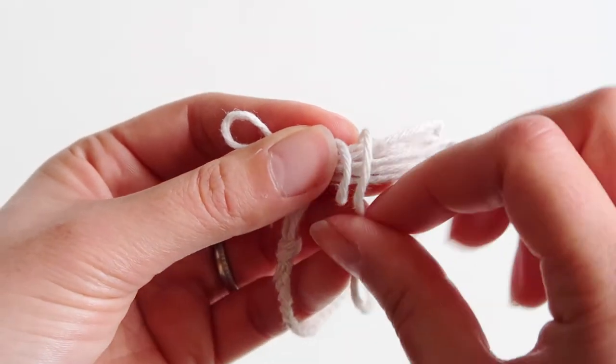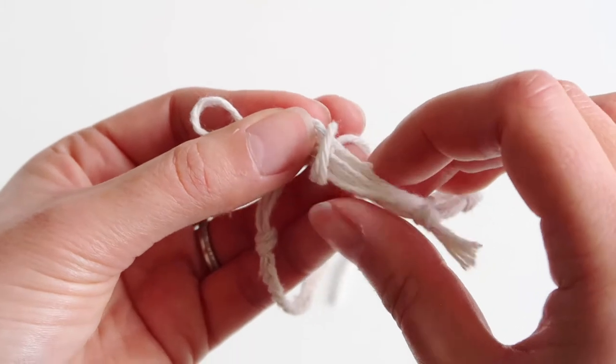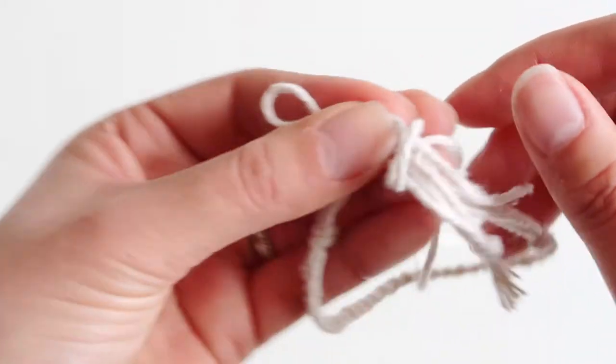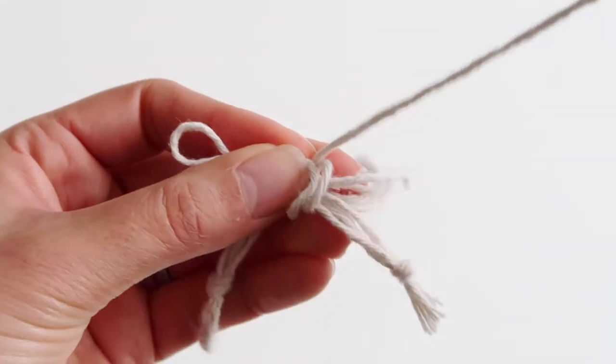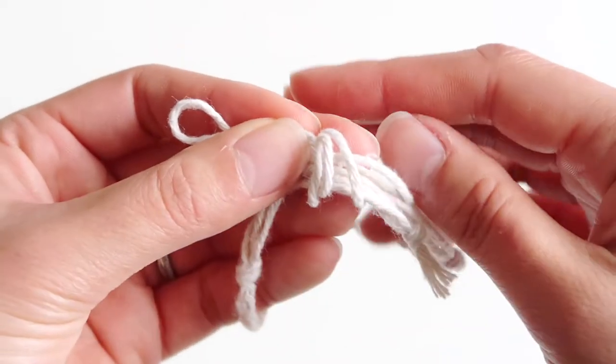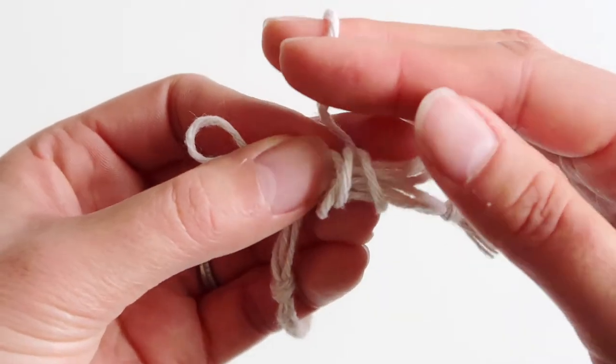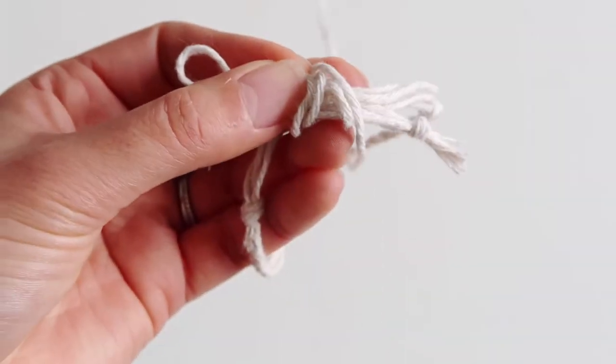Now grab the long bit of the loop that you just put with your bracelet and loop it around the two ends that you're going to essentially join together. Now you want to loop this nice and loosely.